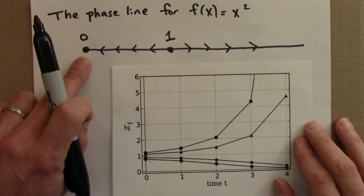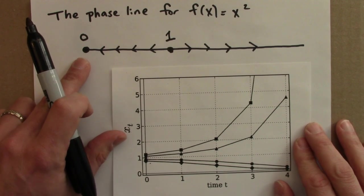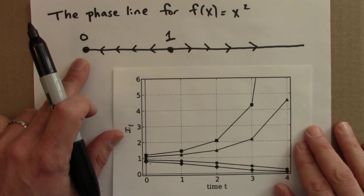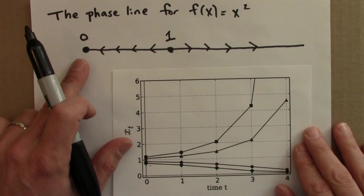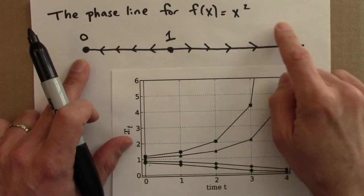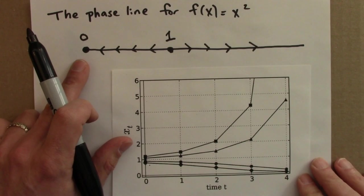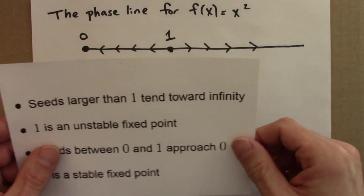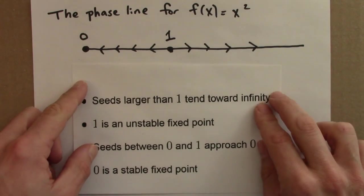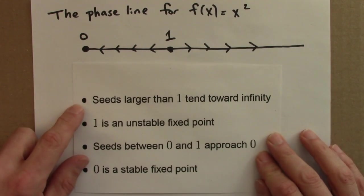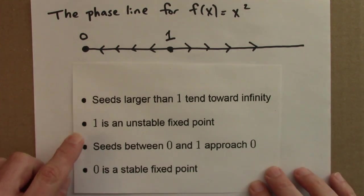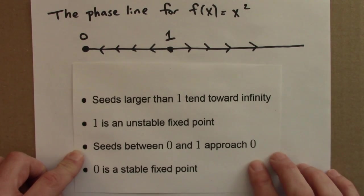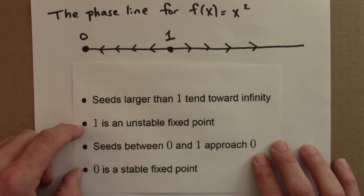Phase lines and their higher dimensional analogs are very useful geometrical constructions for describing the dynamics of a function. This completely describes the long-term dynamics of the squaring function for positive numbers. To summarize: the phase line tells us that seeds larger than 1 tend towards infinity, and seeds between 0 and 1 approach 0.